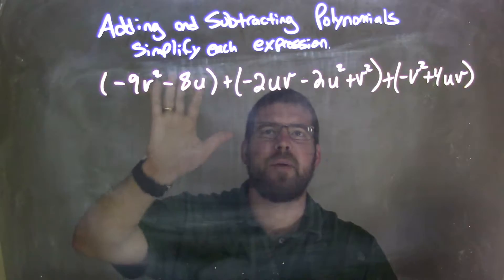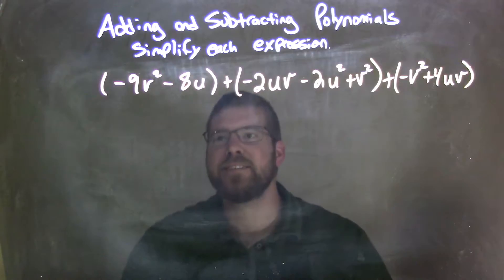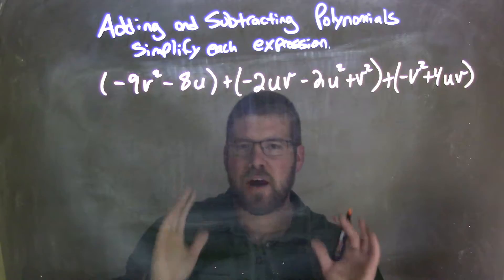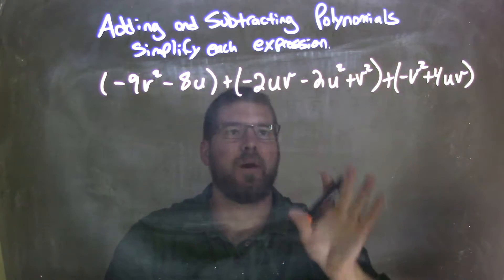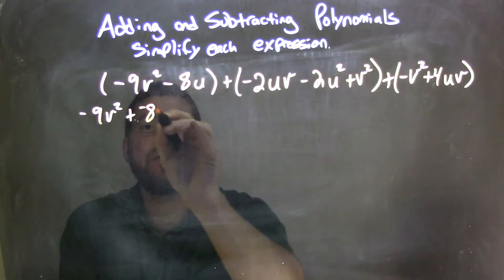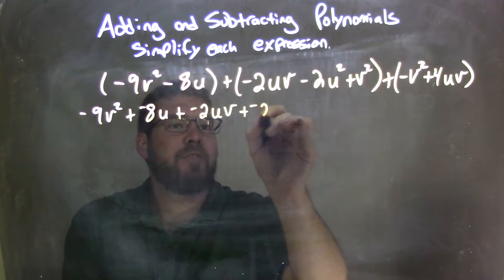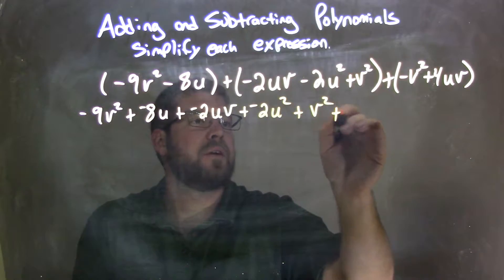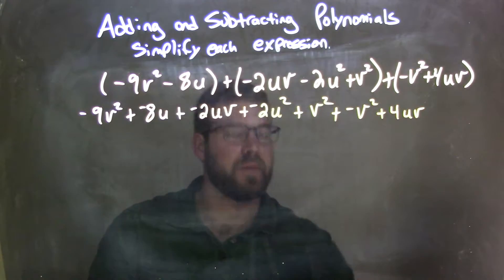So what I have here is a combination of v's and u's and uv's, okay? What I'm going to do is, when I simplify this, I'm going to write everything down as adding a negative — I find that easier. And looking within each parentheses, there's nothing I can simplify within each one. So we have negative 9v squared plus a negative 8u, plus a negative 2uv, plus a negative 2u squared, plus v squared, plus a negative v squared, plus 4uv.